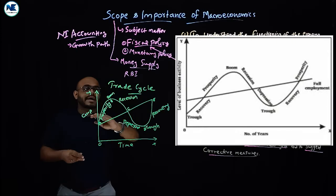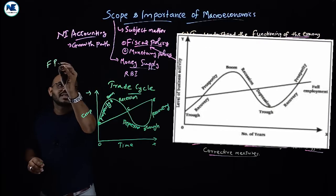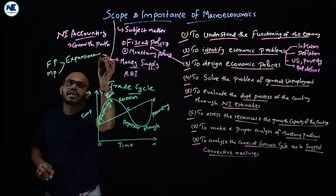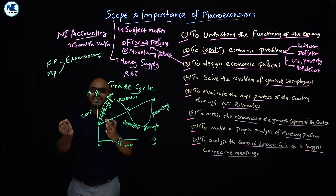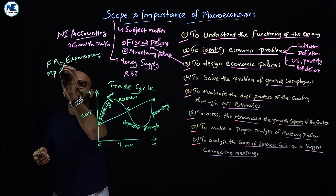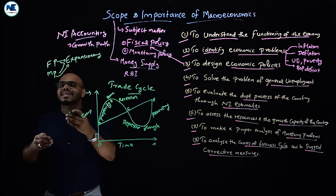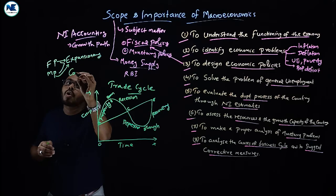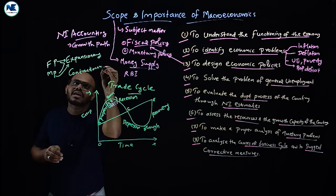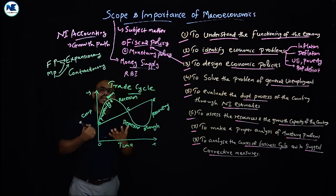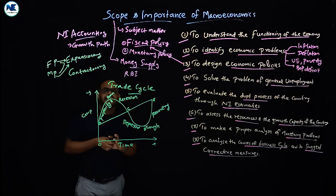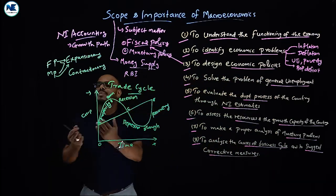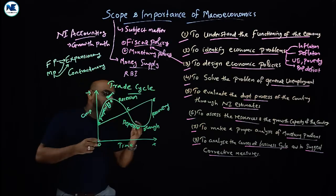Macroeconomics covers theories of the business cycle explaining these ups and downs. Corrective measures involve economic policies: during recession or depression, expansionary fiscal policy and expansionary monetary policy are applied; during a boom, contractionary fiscal policy and contractionary monetary policy are used. This is a key part of the scope of macroeconomics.